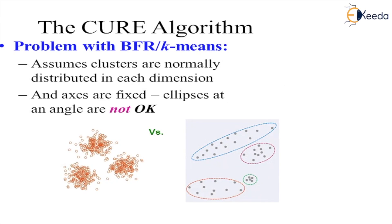The QR algorithm addresses the problem with BFR and K-means. As you can observe in this diagram, we can easily create circular shapes or some ellipse shapes, but we cannot create any different shapes than these. That is the problem with the BFR and the K-means algorithm.